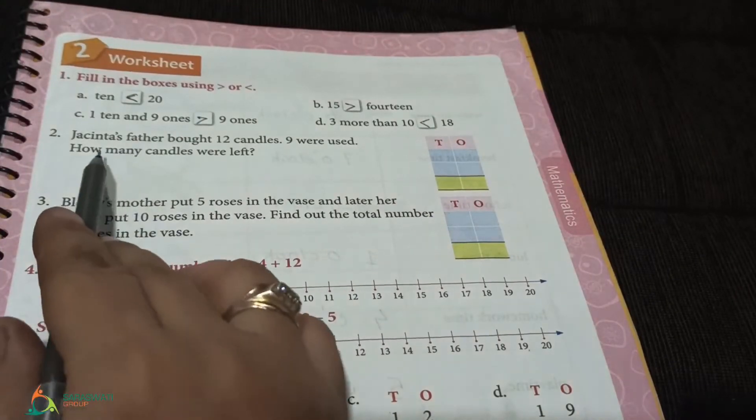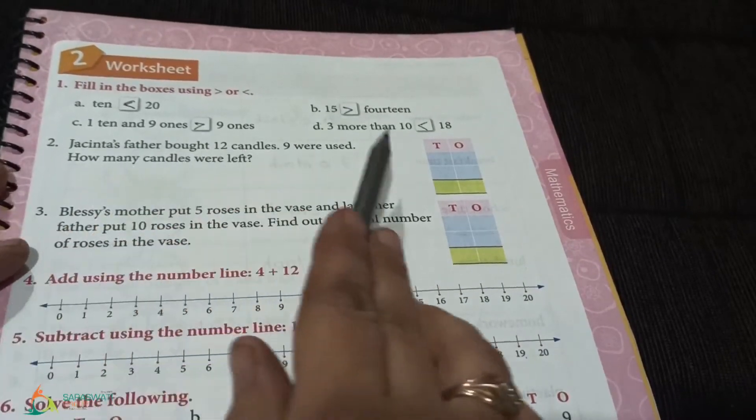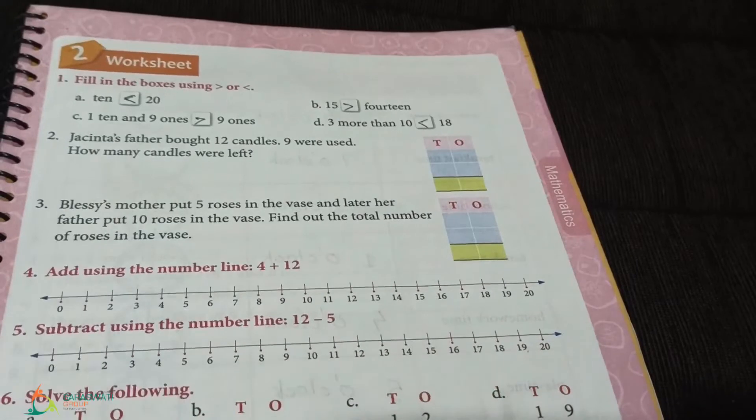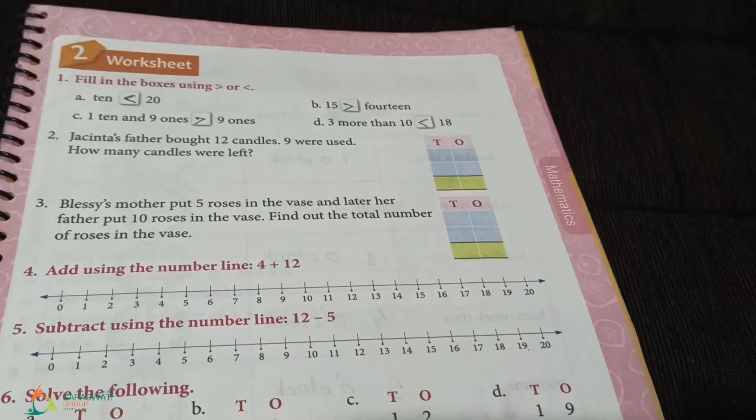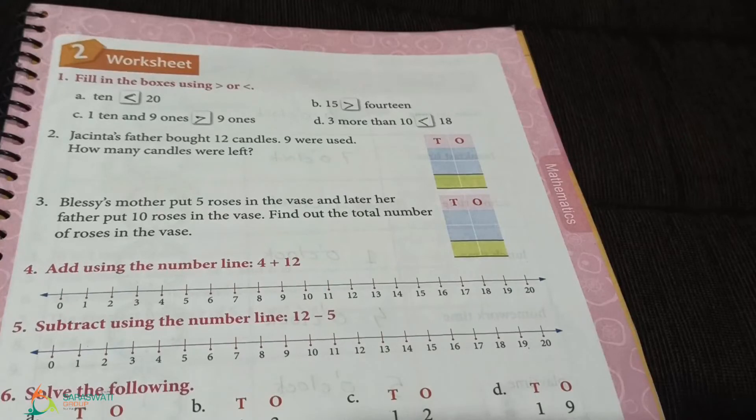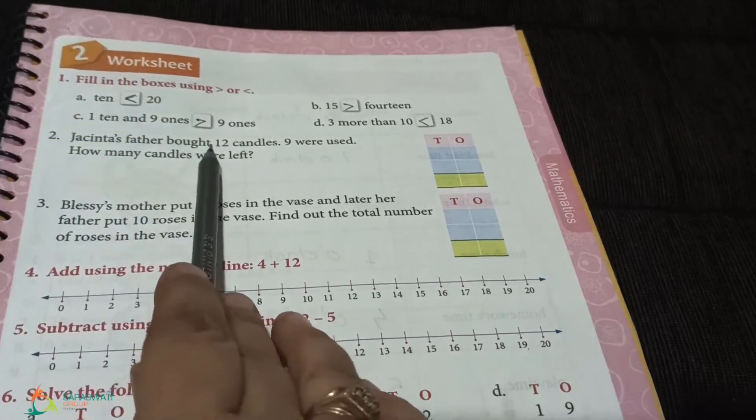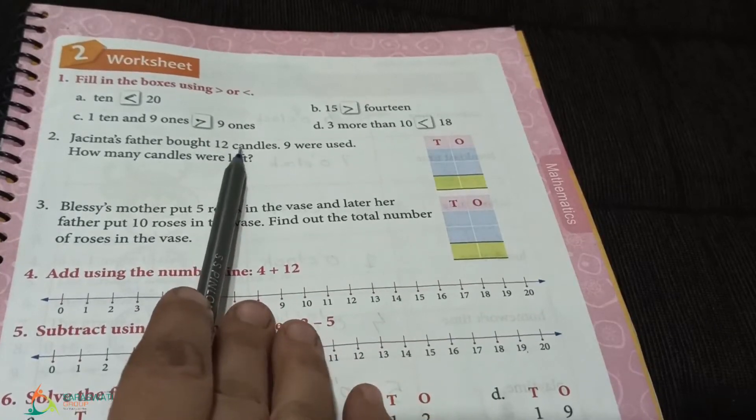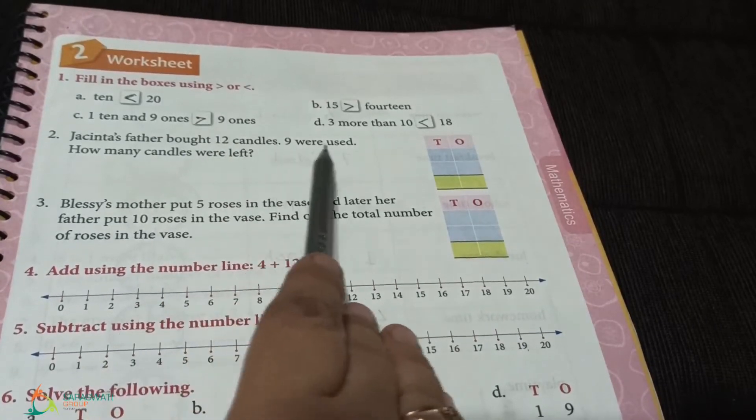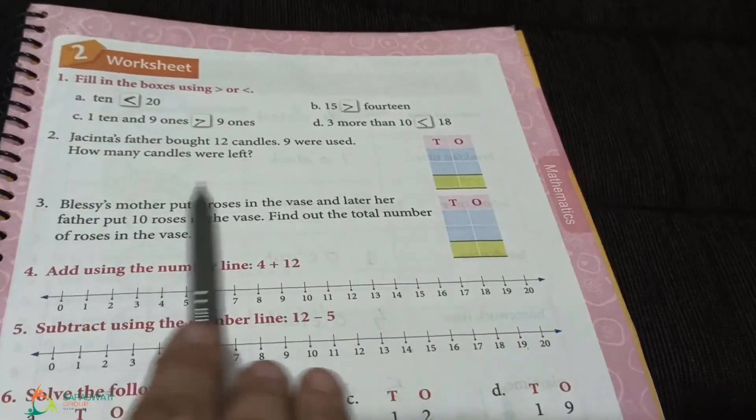Now, story sum. See children, I have told you that in exam, if story sum is more than 1 mark, you will write the statement. If more than 1 mark is not, you can write directly answer. First, Jacinta's father bought 12 candles. 9 were used. How many candles were left?